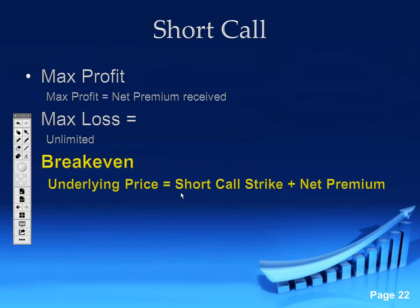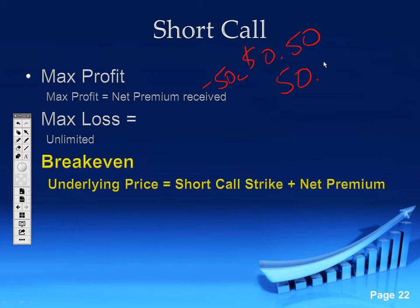Your break-even is the short strike plus the premium received, at expiration. For example, if I sold the 50 calls for 50 cents, my break-even is when the underlying is trading at $50.50 at expiry. We don't want to stick around that long — we want to get out early.